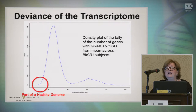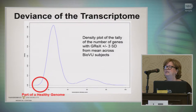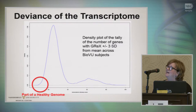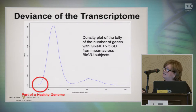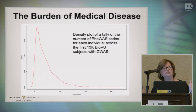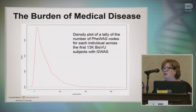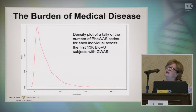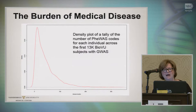Part of a healthy genome is not being in the tails of any of these predicted expression distributions. It's a bad thing to be in the tails. The number of genes where you're in the tails is significantly correlated with the number of PheWAS codes that you accumulate across a lifetime. The more genes you have in the tails of distributions, the more different phenome codes you're going to accumulate. Bad things happen at both ends.